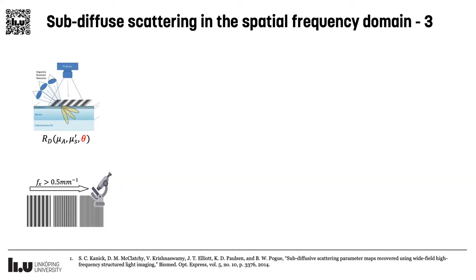Using these two approaches, we want to explore light scattering in the sub-diffuse regime. So, what is sub-diffuse light? It consists of photons which have only gone through a few scattering events, so they still retain some information on their original state, like direction of propagation or polarization.